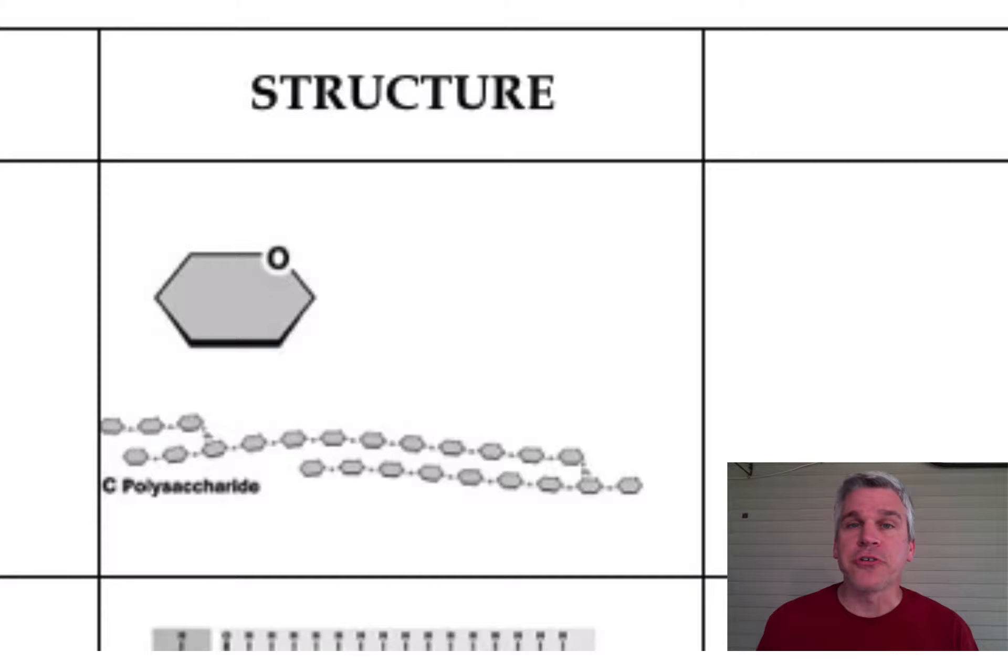You're given the structure, so you need to know what the structures look like so you can identify what type of organic compound it is. In that first one, we see that hexagon shape, and in another example, a bunch of these little tiny hexagon shapes that are connected together.